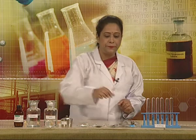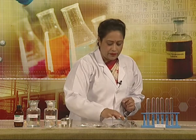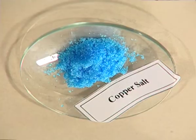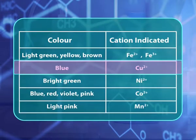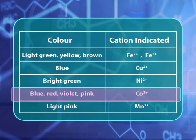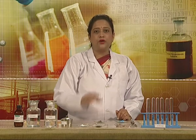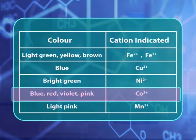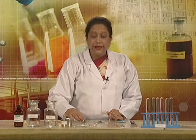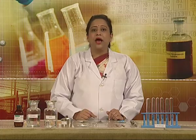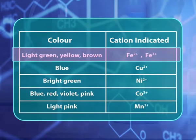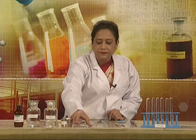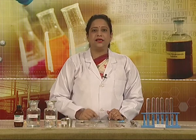For example, if the color of the salt is blue, this indicates the presence of either copper ions or cobalt ions. If the color of the salt is blue, red, violet, or pink, it may be due to the presence of cobalt ions. Iron salts are usually either light green or brown in color, and certain salts are white in color.